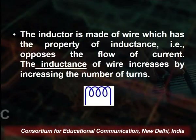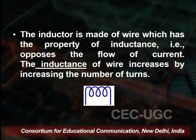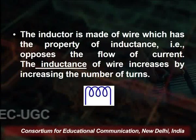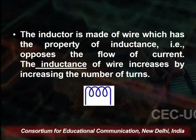Through the inductor, inductance can be produced. The inductor is a passive component which stores electrical energy in the magnetic field. It is made of wire which has a property of inductance, that is, it opposes the flow of current. The inductance of a wire increases by increasing the number of turns. As you see on the screen, this is the symbol of the inductor.